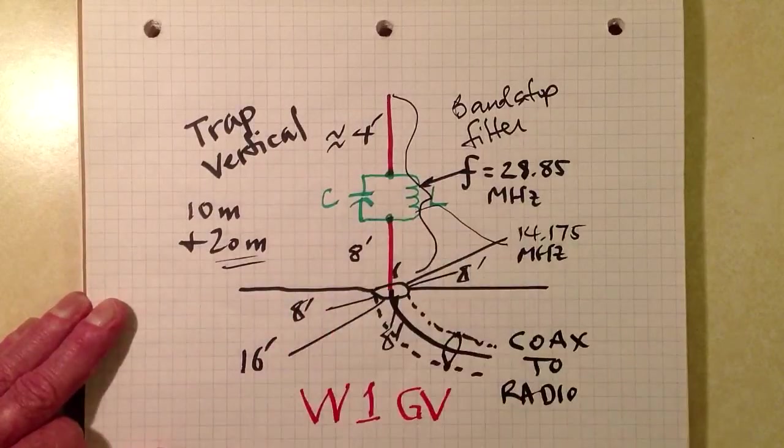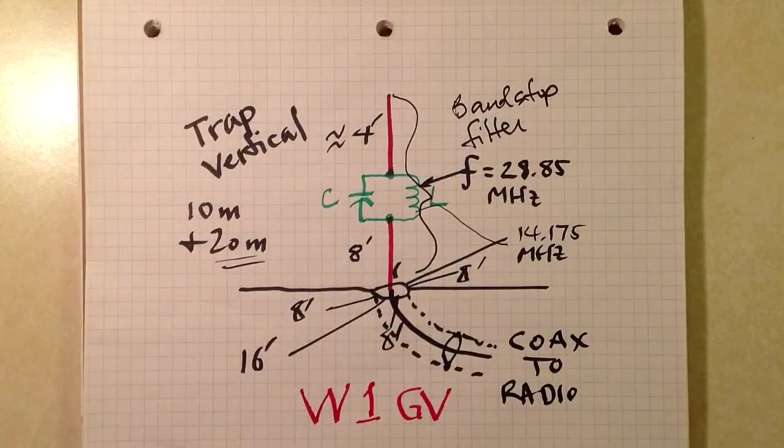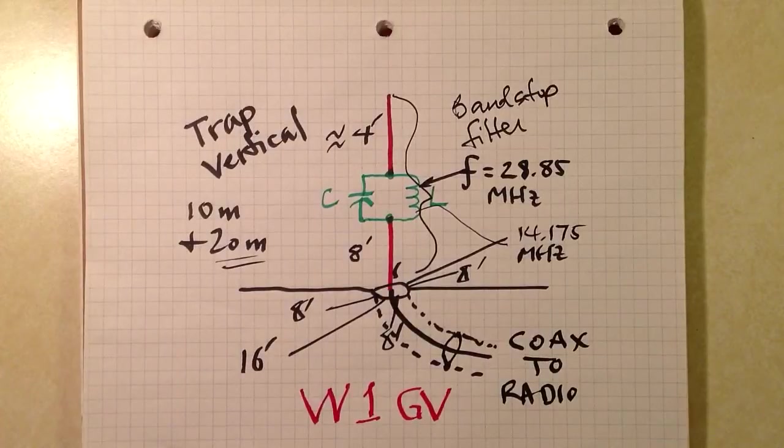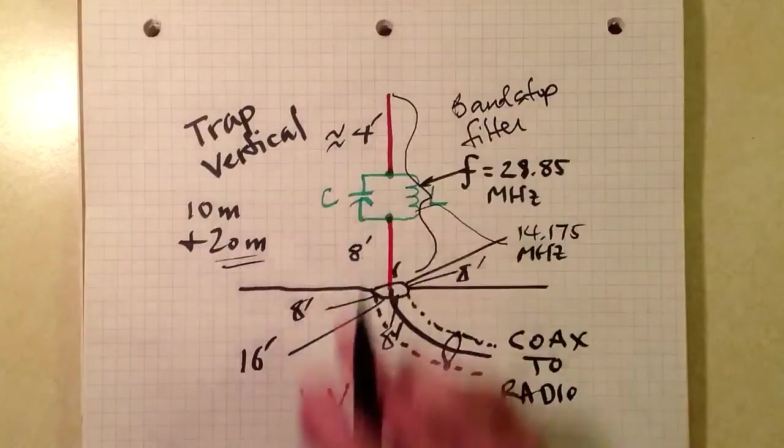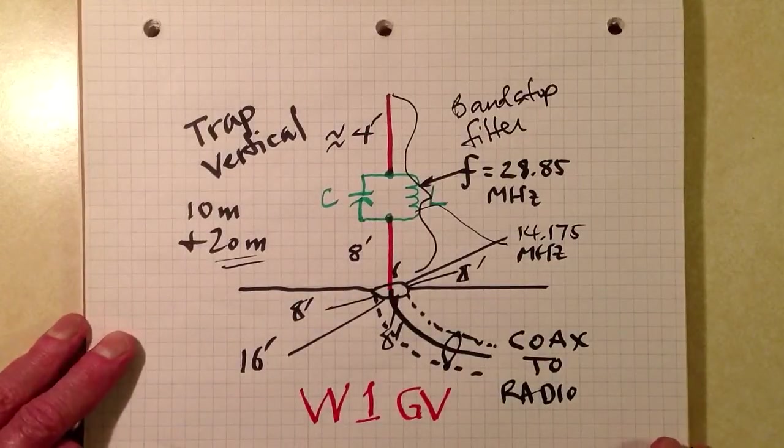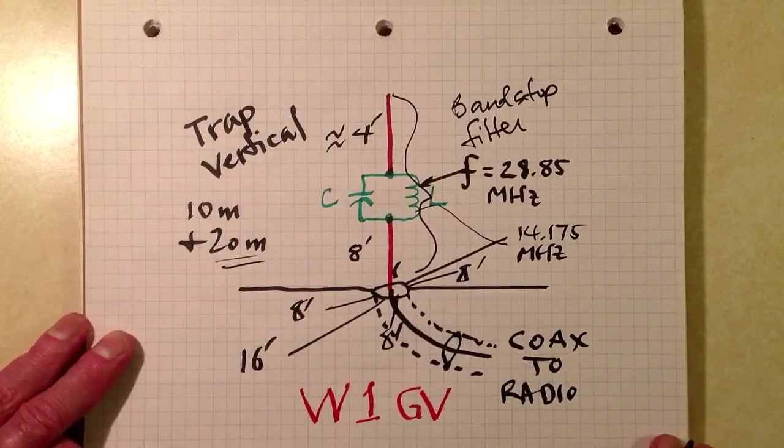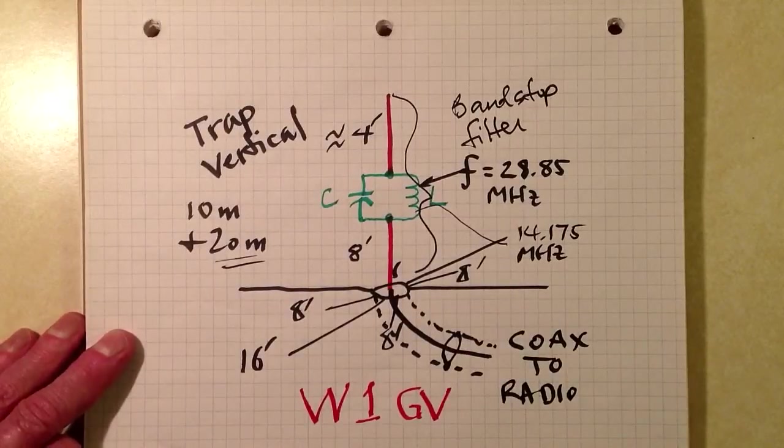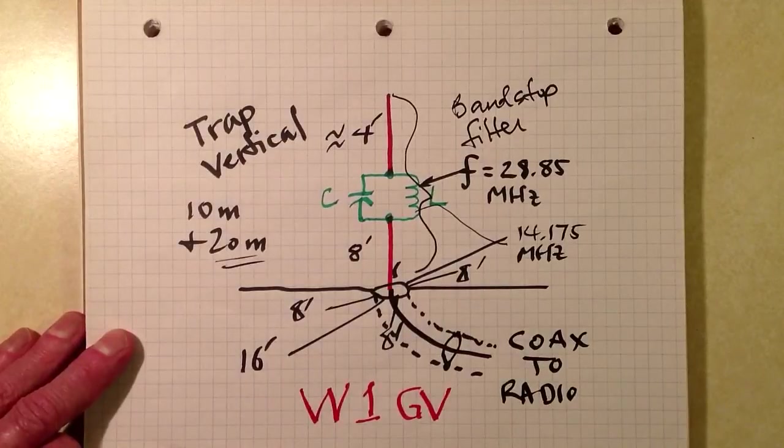Now you can use more than one trap to get three, four, even five band trap verticals if you are so predisposed. But the adjustment of those things gets kind of complicated. But it's done all the time in commercially manufactured antennas, and you just set it up to the dimensions that they tell you to, and it should work.